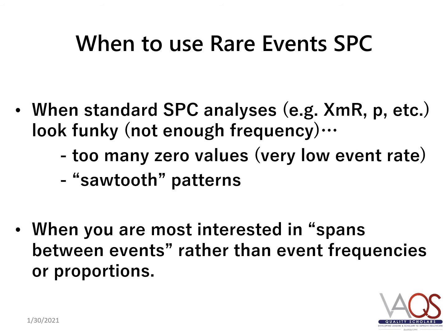There are two basic indications for using rare events analyses in SPC. The first is when you detect that the event rate is too low or infrequent to use standard SPC analyses, such as the XMR or P-Chart, both of which require frequent observations. You may observe too many zero values in your data display, suggesting a very low event rate, or you may observe a visual sawtooth pattern. The second indication is when you are most interested in spans of events or time that occur between events, rather than the event frequencies or proportions themselves.